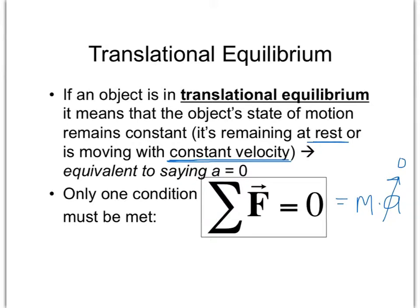The condition is that the net force in any direction, x, y, or otherwise, all the net forces in any direction have to equal out to be zero. Now that's actually going to make it pretty easy for us because these objects are not accelerating. Let's take a look at an example and we'll see how we can apply this.